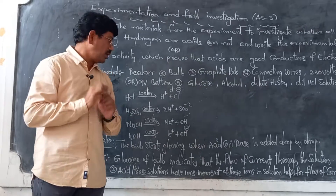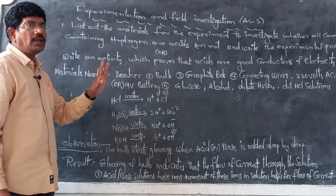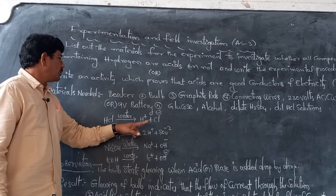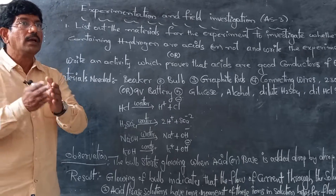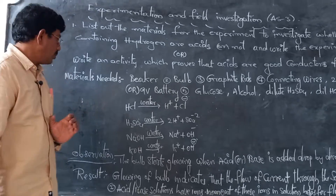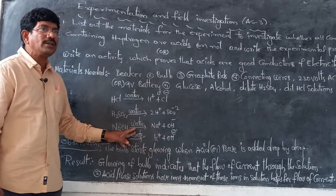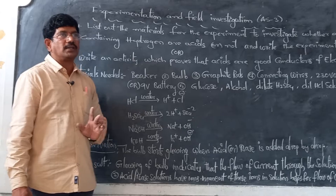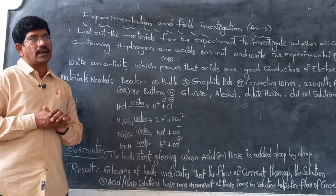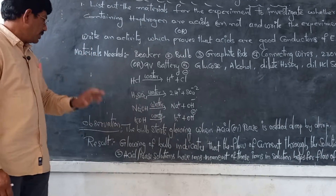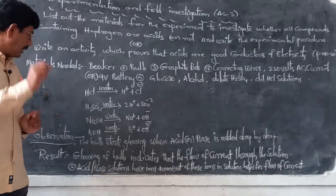In acid solutions you will find ions because acids split into ions in their aqueous solutions. For example, HCl splits into H⁺ and Cl⁻ ions — these ions are responsible for the passage of current. Similarly, sodium hydroxide splits into Na⁺ and OH⁻ ions, and KOH likewise — these ions are responsible for the passage of electrical current.